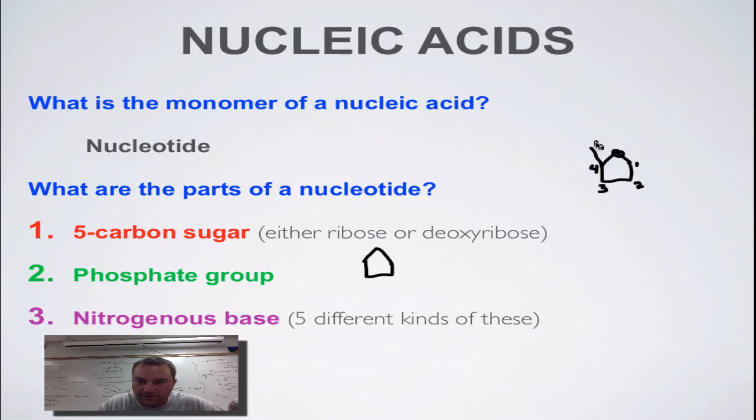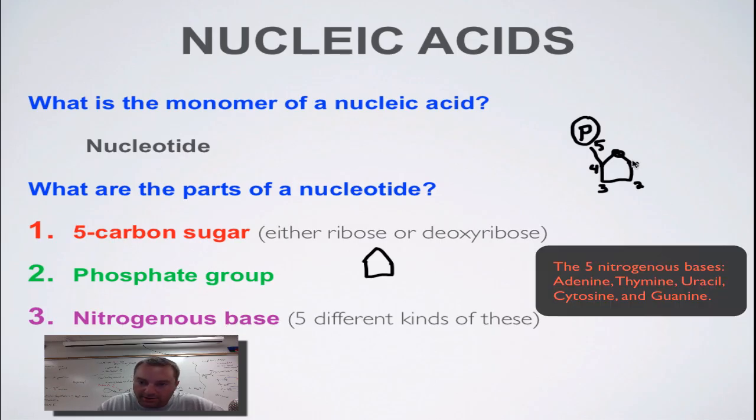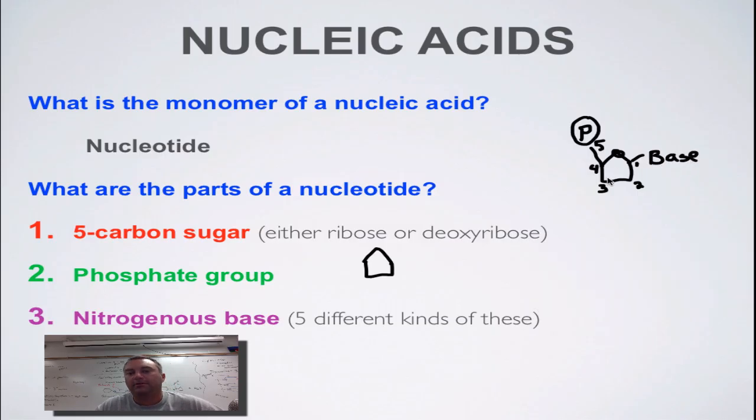This is actually an oxygen molecule right here. The fifth carbon is sticking up over here—think of a house with a chimney coming off of it. We have a phosphate group, so you put a little P at the top of your chimney. Then we have a nitrogenous base. Think of baseball—we're going to put the base on the first carbon, first base. This is your shape of a nucleotide.